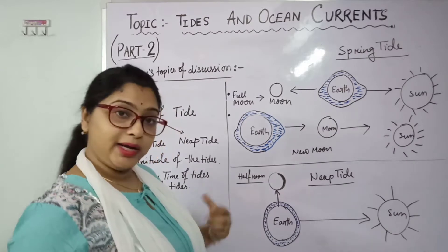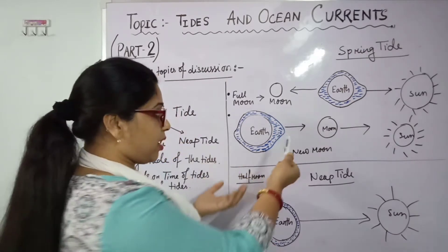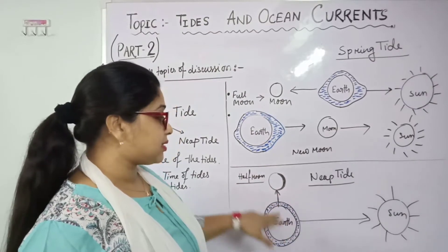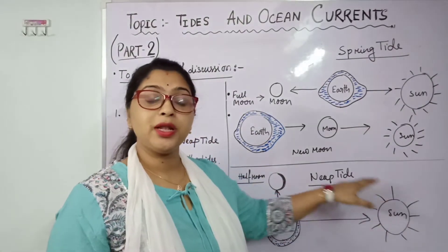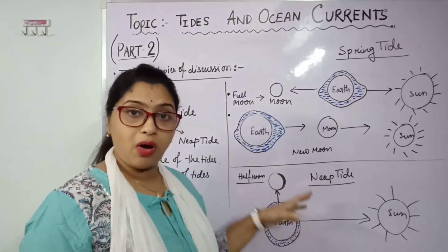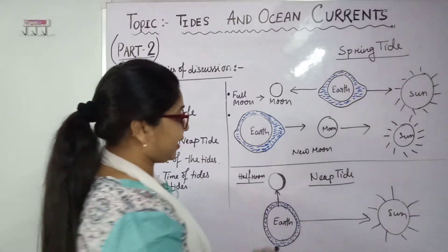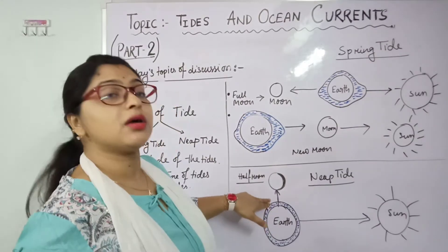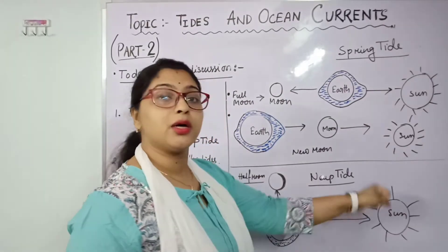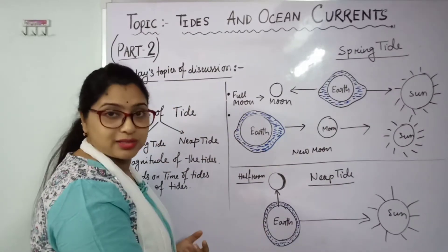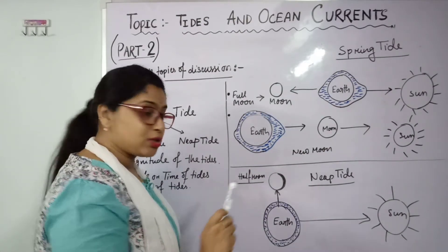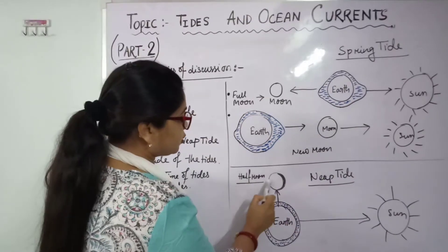Next is neap tide, which is actually not a high tide — it is known as a low tide. The tide is happening and rising of water is there, but not as much as in spring tide. In this case, the earth, moon, and sun form a quadrature or right-angle shape. The moon is attracting water and the sun is also pulling the water, but in different directions, so the water bodies do not bulge properly on any side.